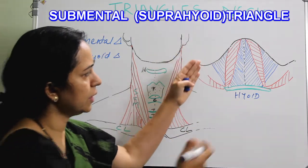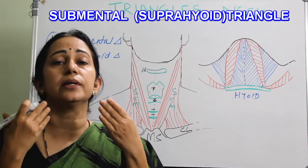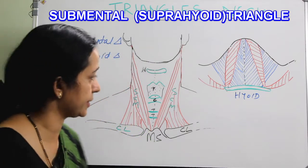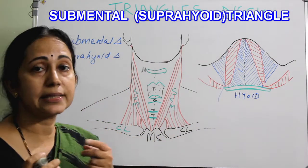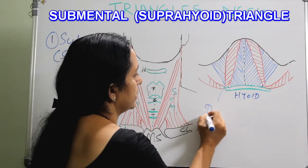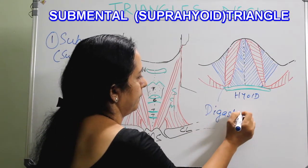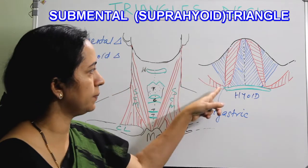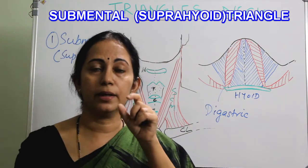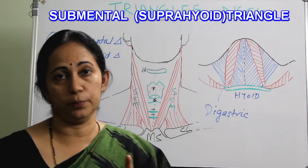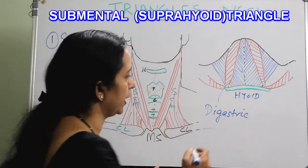The two lateral boundaries are actually the anterior belly of the digastric muscle. The digastric muscle has an anterior belly and a posterior belly with a common tendinous attachment to the hyoid bone. This is the anterior belly of digastric.